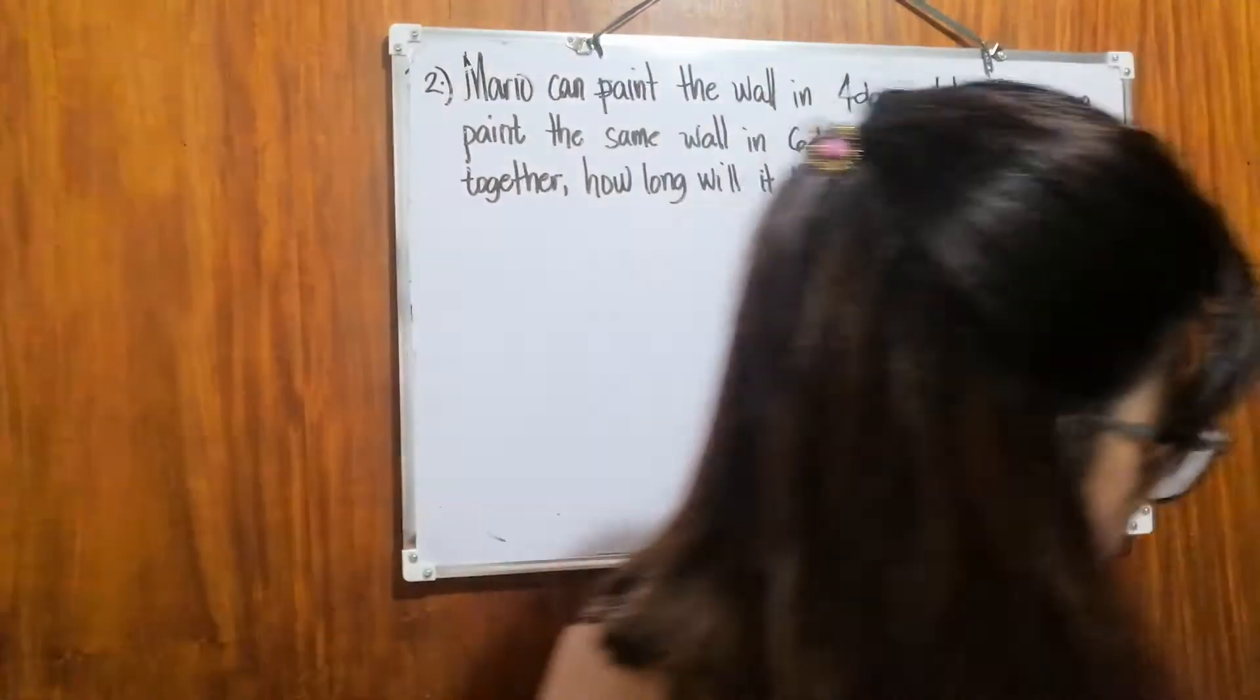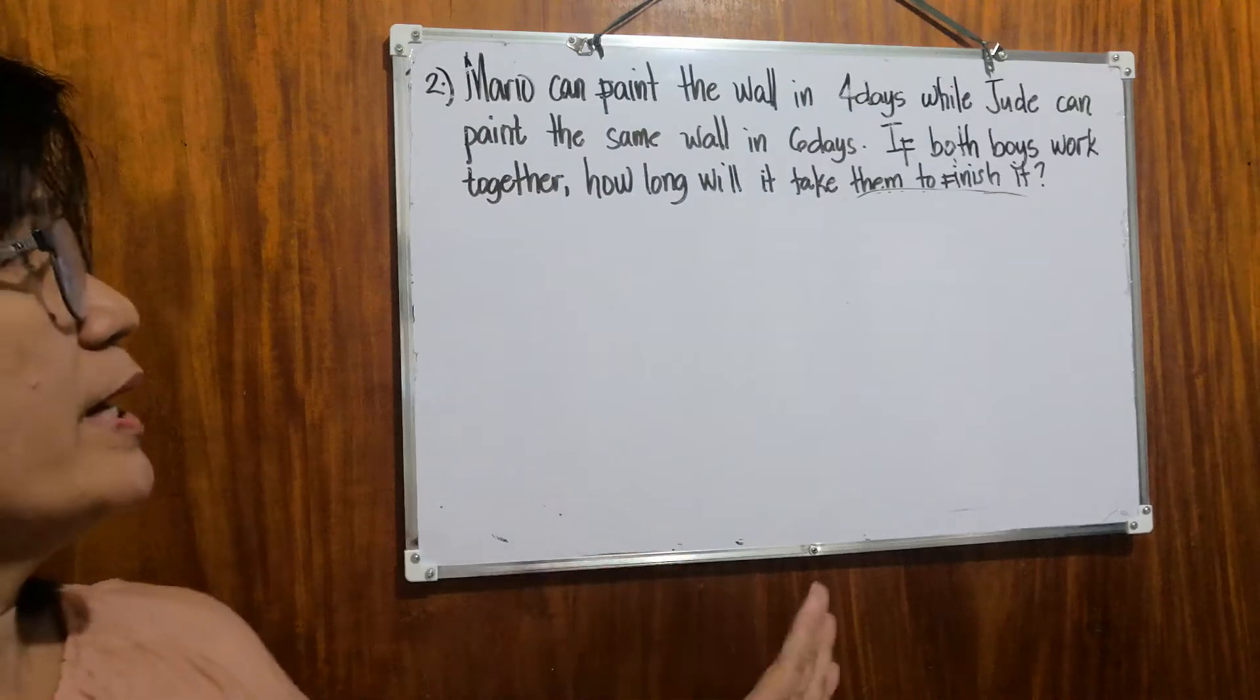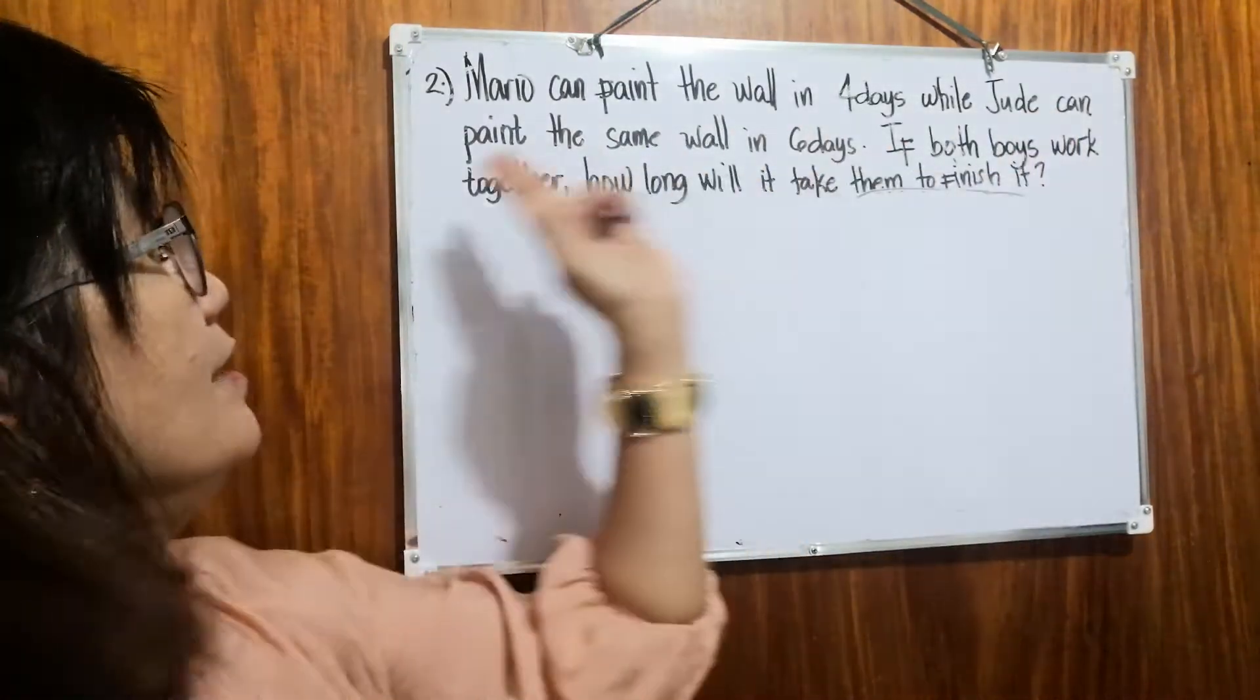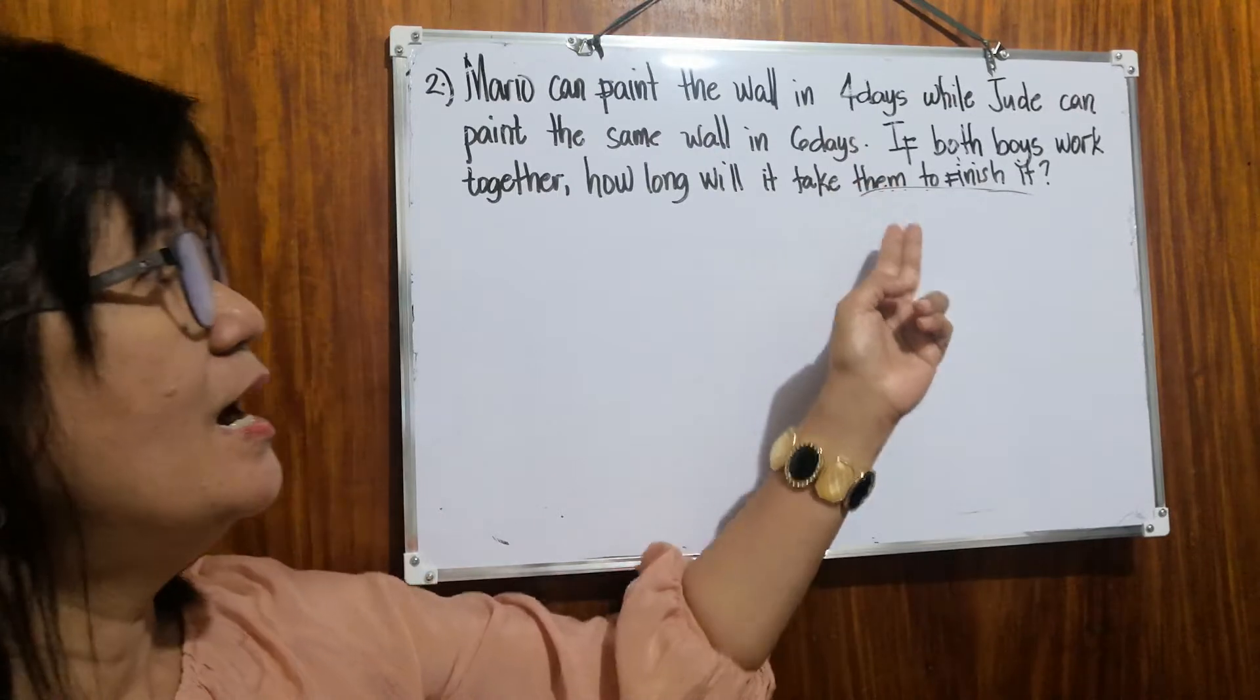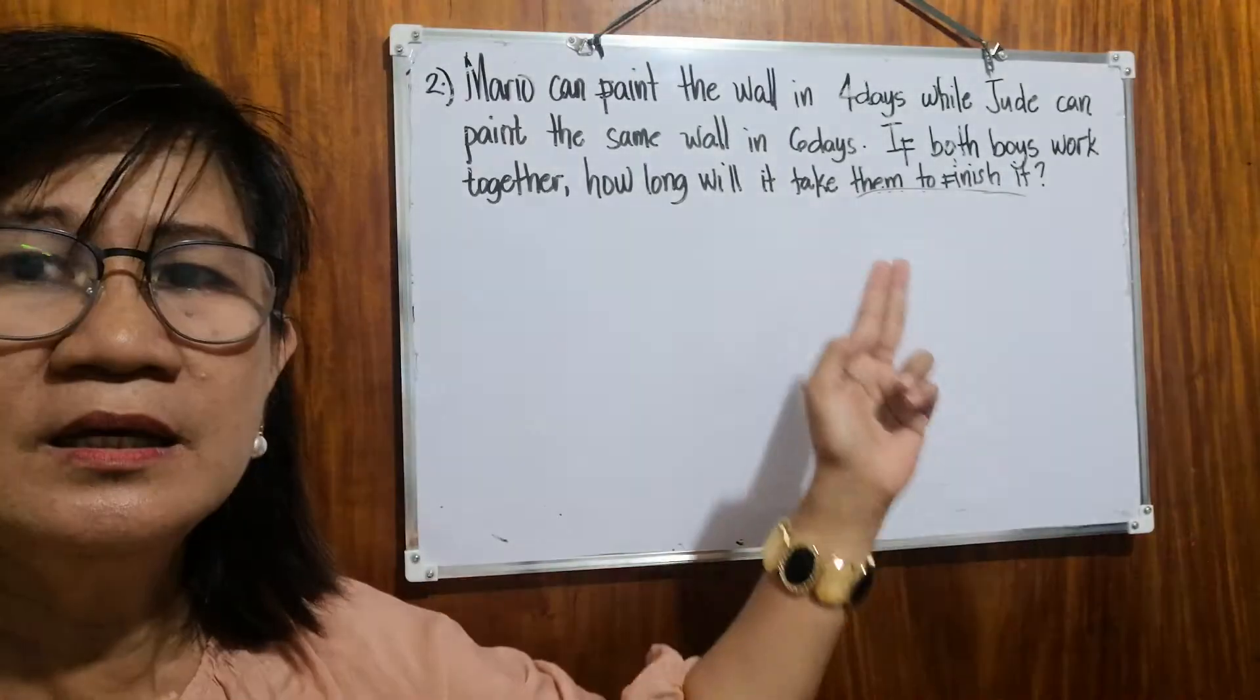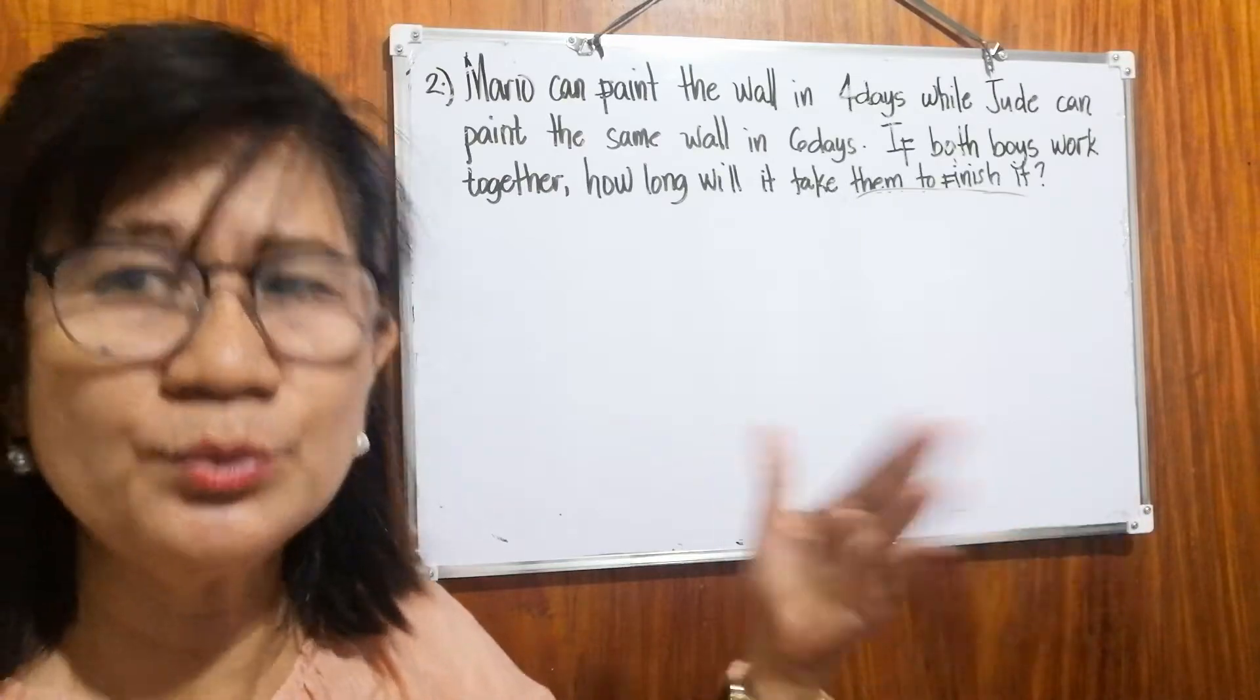Let's take another example. Number two. Mario can paint the wall in four days, while Jude can paint the same wall in six days. If both boys work together, how long will it take them to finish it?